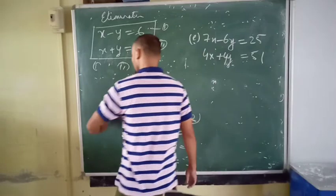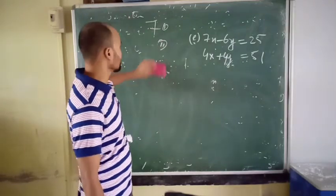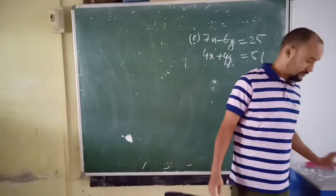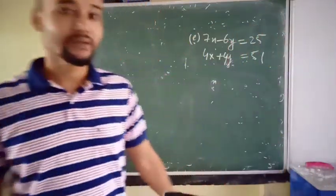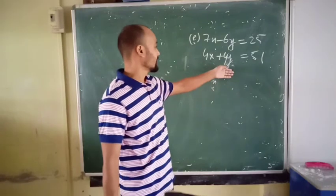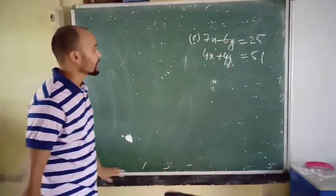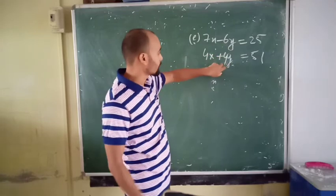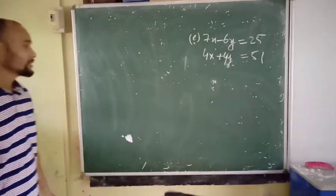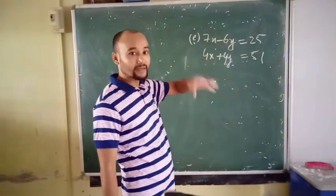I am moving to the next elimination example. The equation is not similar to the book equation — in the book it was 19, I used 9, so don't be confused. Now, the coefficients of y in the two equations are 6 and 4. We cannot directly eliminate. The hint is: y is negative in one and positive in the other. We need to make the coefficients equal — that is the main thing.